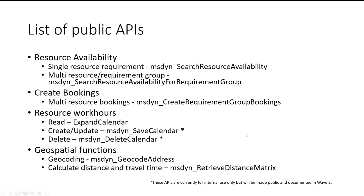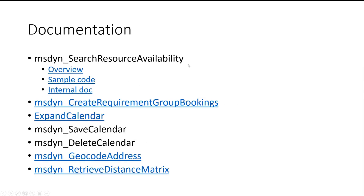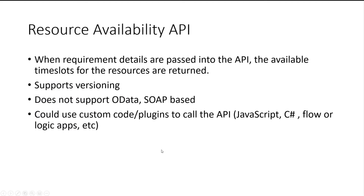For today's call, we'll be focusing on the Search Resource Availability for single resource requirements, and I've added references that I'll be sharing at the end. Getting into the resource availability API, you can pass the details of a requirement — the demand for a job — which could be a work order, a requirement, or a custom entity enabled for scheduling. The API processes this information and returns the available time slots for eligible resources.